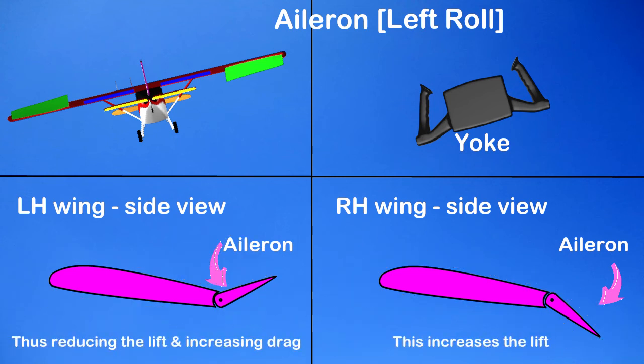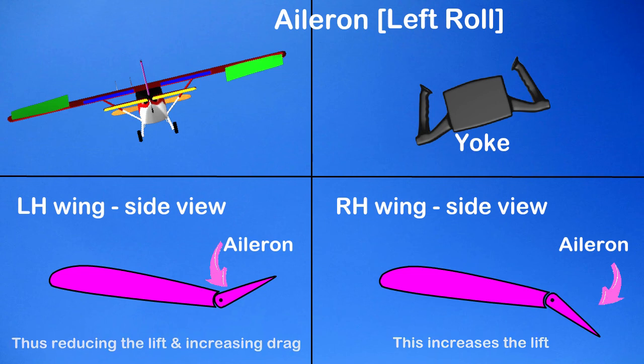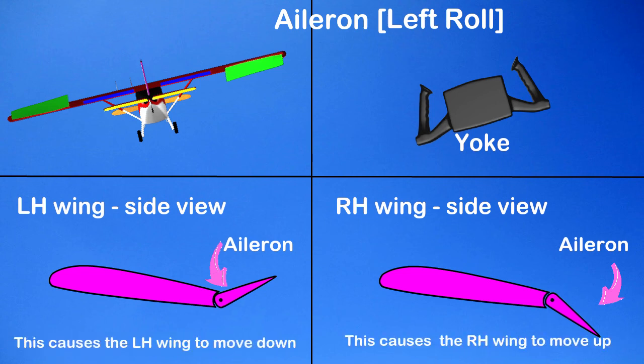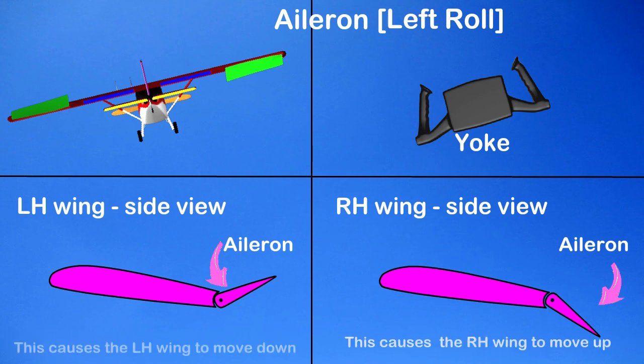Thus reducing the lift and increasing the drag on the left hand wing, and increasing the lift on the right hand wing. This causes the left hand wing to move down and the right hand wing to move up.